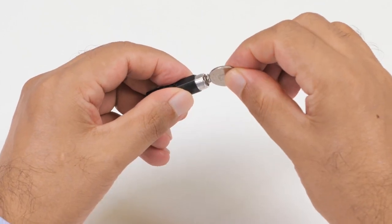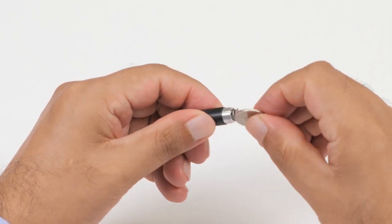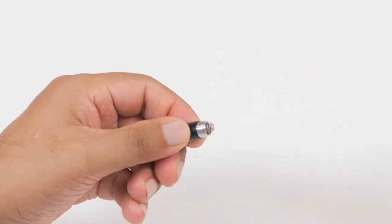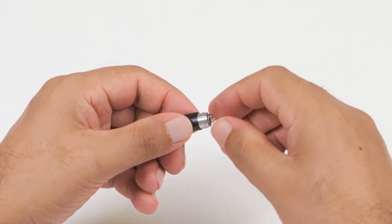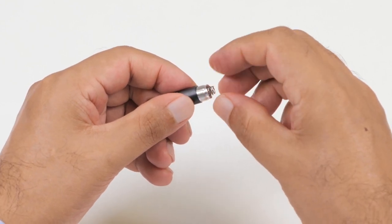Insert a small coin into the slot on the coin cell battery holder. Then, twist it counter-clockwise to unlock it. Loosen the coin cell battery holder with your fingers until you can remove it completely from the top of the pen.